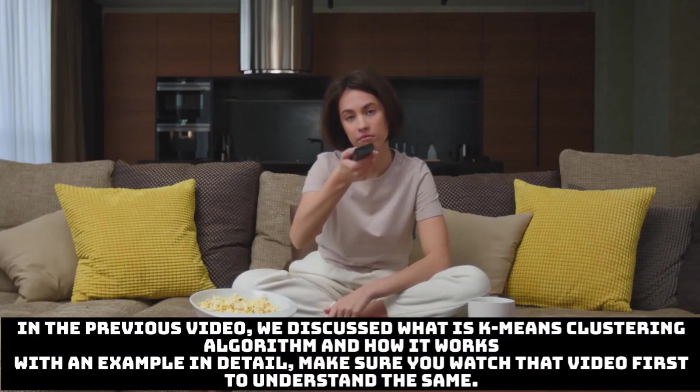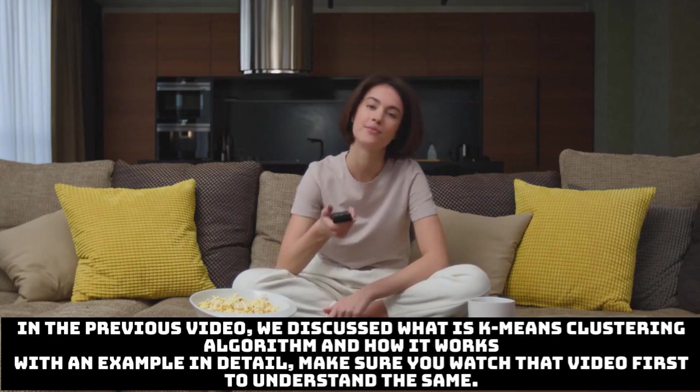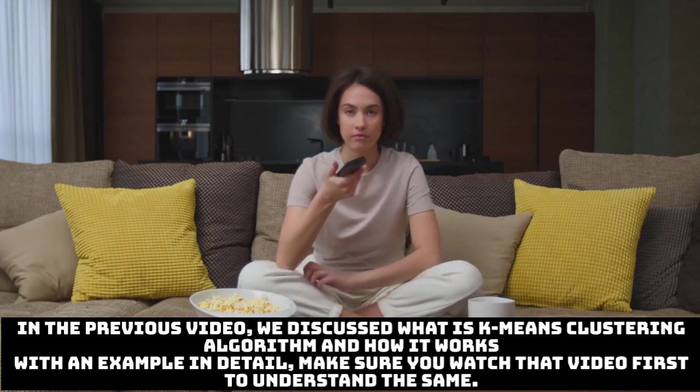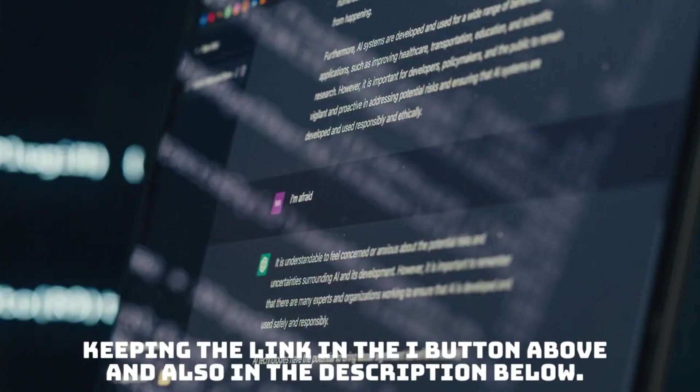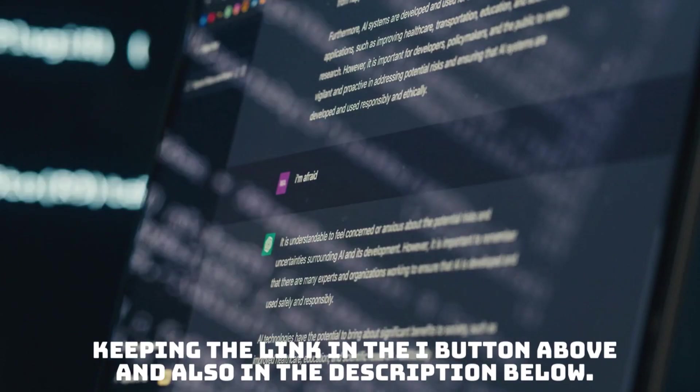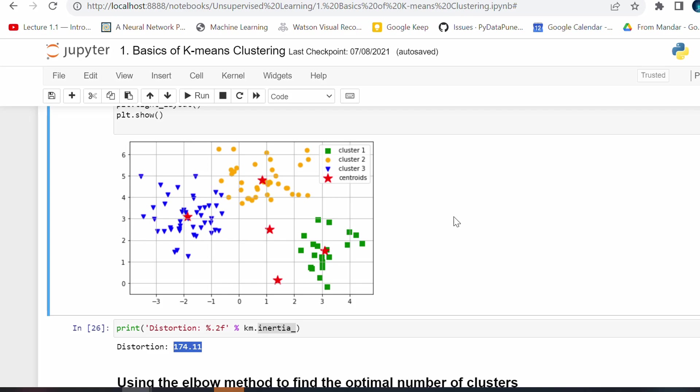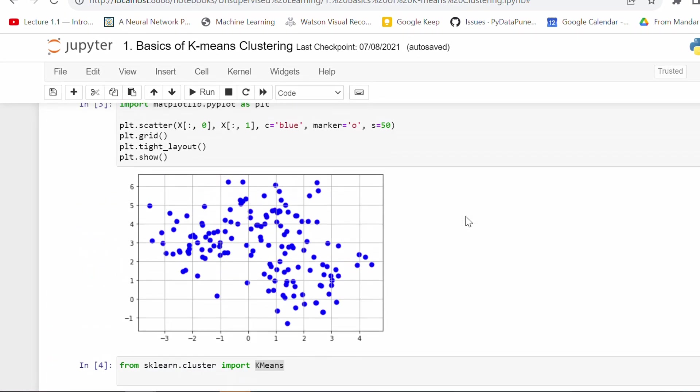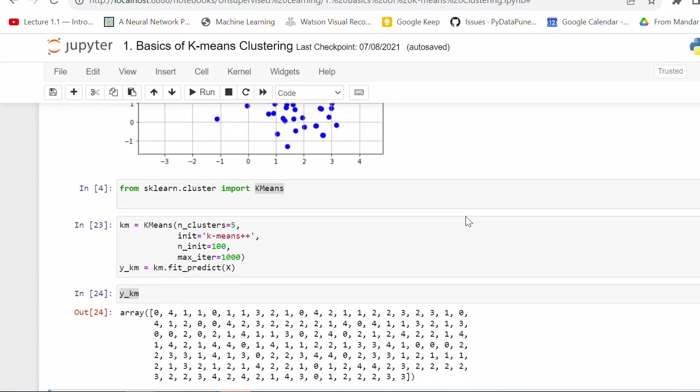In the previous video we discussed what is K-means clustering algorithm and how it works with an example. K-means falls under unsupervised learning type. So how do we work with unlabeled data? Unsupervised learning - make sure you watch that video first to understand the same in detail. I've kept the link in the I button above and also in the description below.